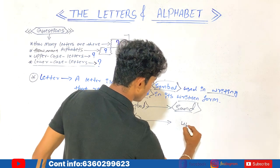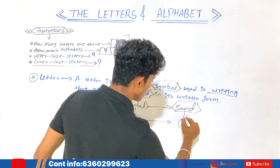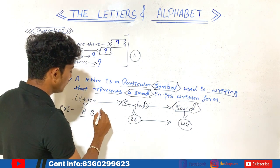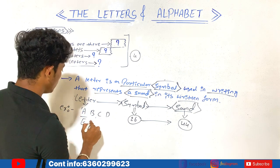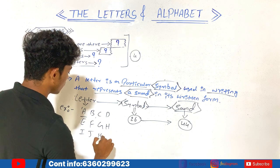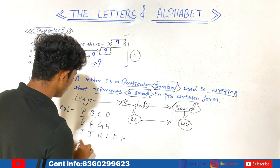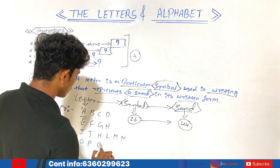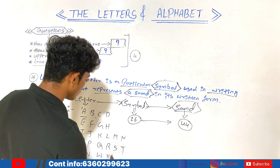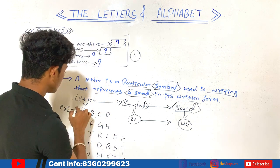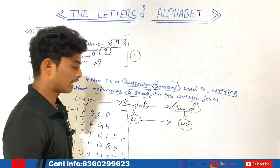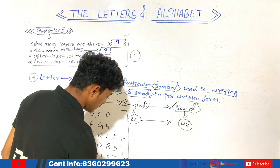What are those 26 symbols? I am going to write them here: A, B, C, D, E, F, G, H, I, J, K, L, M, N, O, P, Q, R, S, T, U, V, W, X, Y, Z. I have written here a total of 26 symbols — we can say they are 26 letters, from A to Z.